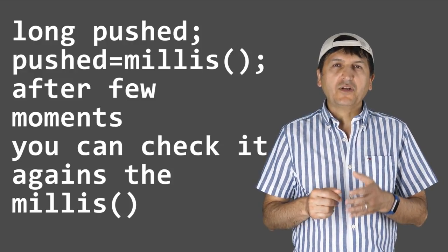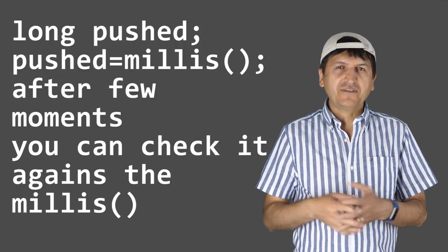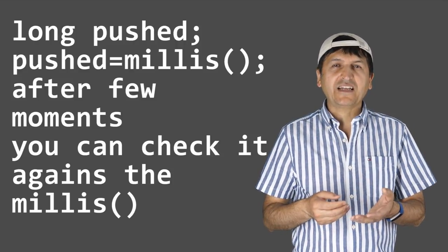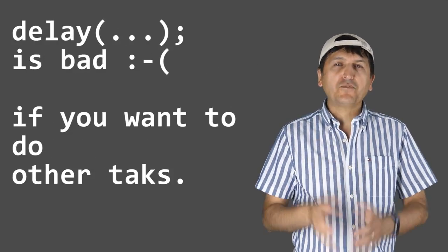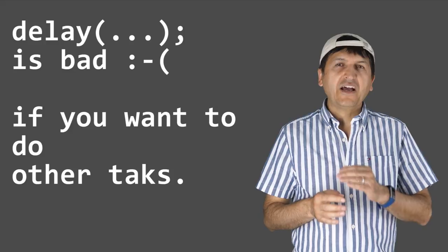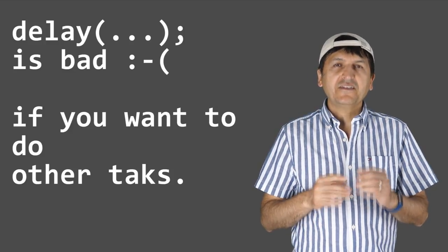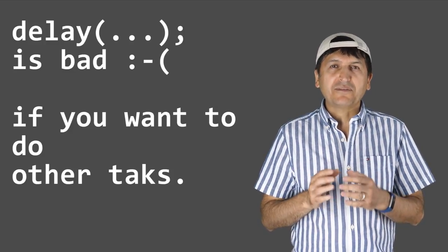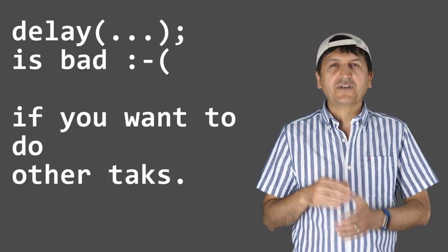Many times people use the delay function — for example, delay(5000) for a five-second delay. But the problem with delay is that it halts the entire program; everything waits until the delay passes. With millis, it will not interfere with any other features, and the rest of the program and components connected to Arduino all function normally.